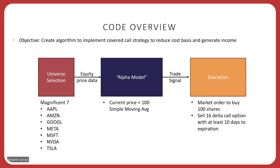The algorithm I'm going to highlight in this short demo will create a covered call strategy to reduce cost basis and generate income. I've broken it down into three main sections. The first is universe selection — just like last week, I'm going to use the Magnificent Seven as my universe: Apple, Amazon, Google, Meta or Facebook, Microsoft, NVIDIA, and Tesla.